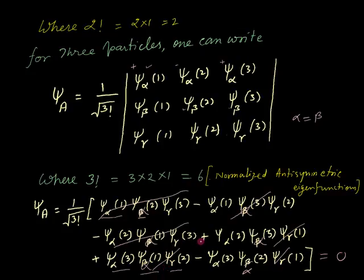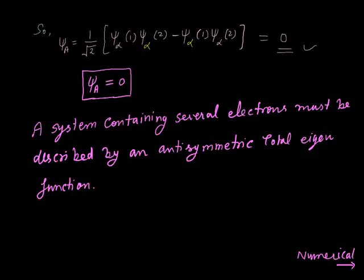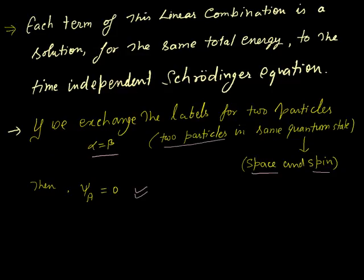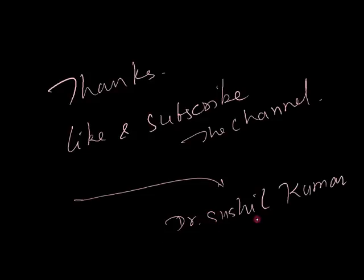This result satisfies the Pauli exclusion principle. By using the Slater determinant one can write the anti-symmetric eigenfunction, which is the condition for the Pauli exclusion principle. One important point: the Pauli exclusion principle specifies the properties of electrons only, not of the atom. Thanks for watching — if you have any questions, write in the comment box. Please like and subscribe. I am Dr. Sushil Kumar and you can visit my blog at www.apniphysics.com.